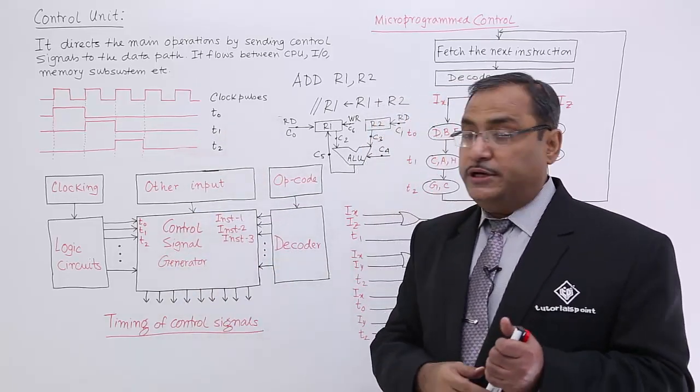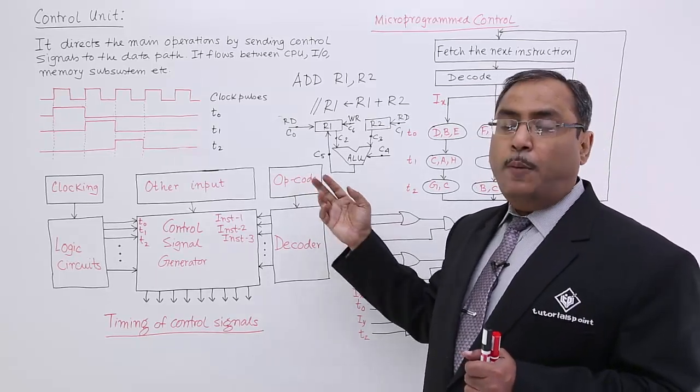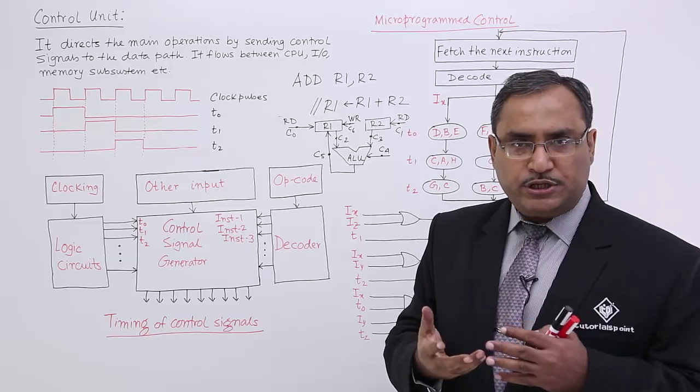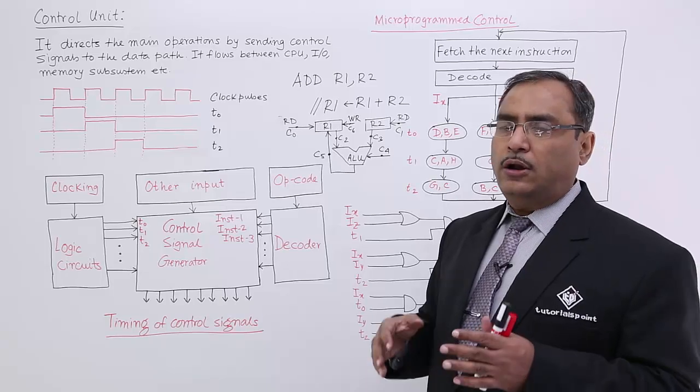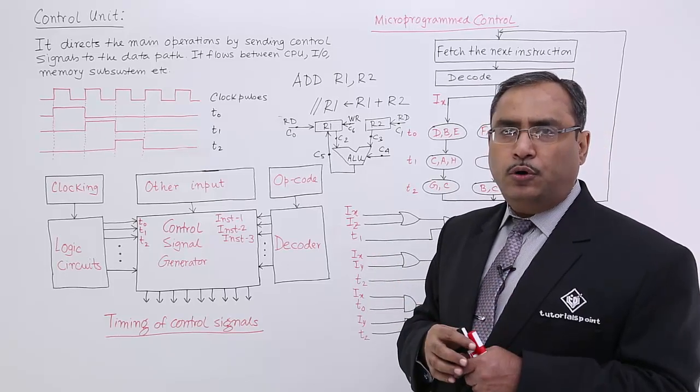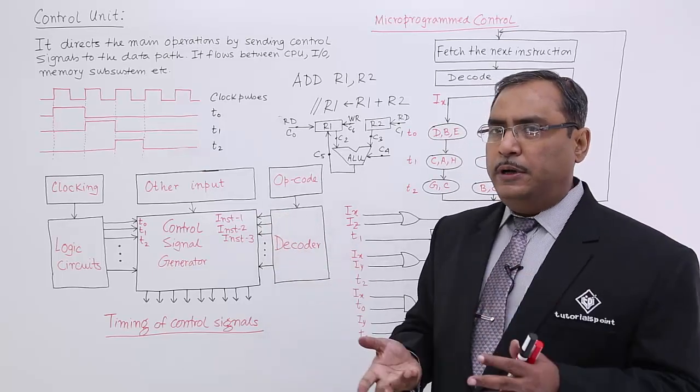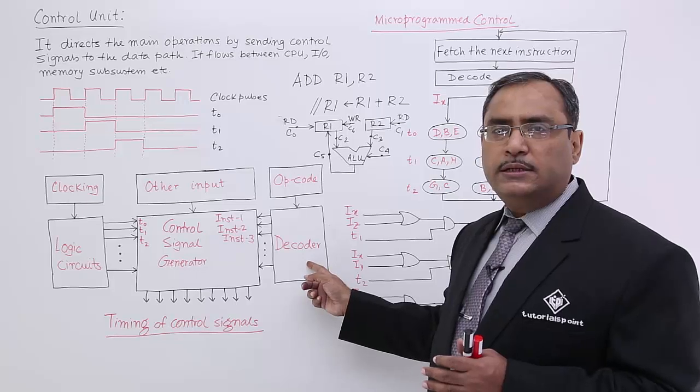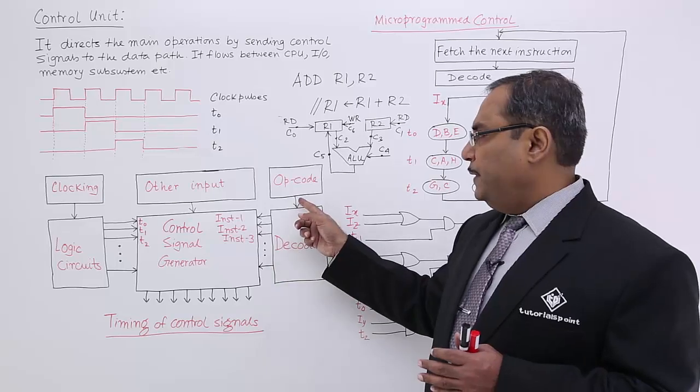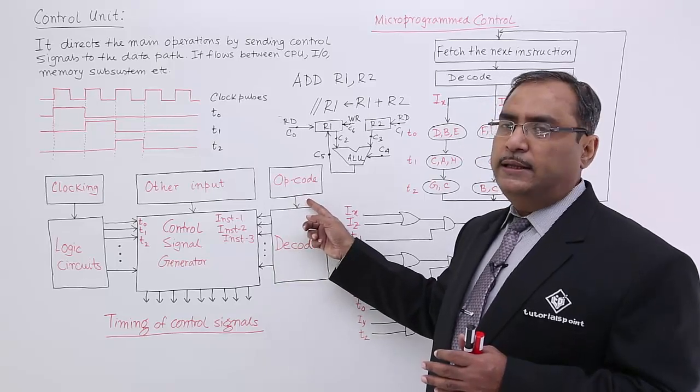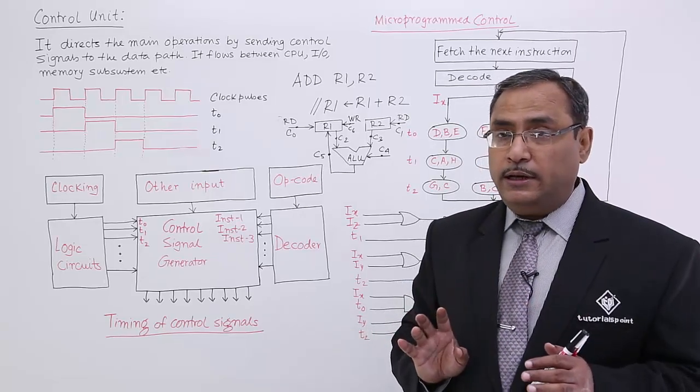This is a control signal generator circuit. Now opcode is being kept in this particular register. Opcode means operation code means instruction. This opcode will be decoded because until and unless we decode the opcode we cannot get the meaning, what is the purpose of the opcode. After getting decoded one of the output lines of this decoder will get enabled. Decoder is a combinational circuit which will have n number of input lines and 2 to the power of n number of output lines. Depending upon the voltage combination at the input, one of the output lines will be selected that we read in our digital electronics classes.